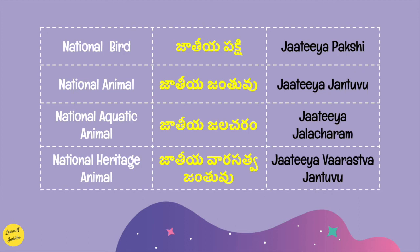Now let's see the next set of national symbols. The term national bird is Jatiya Pakshi. National animal is Jatiya Jantuvu. National aquatic animal is Jatiya Jalacharam. National heritage animal is Jatiya Varasattva Jantuvu.